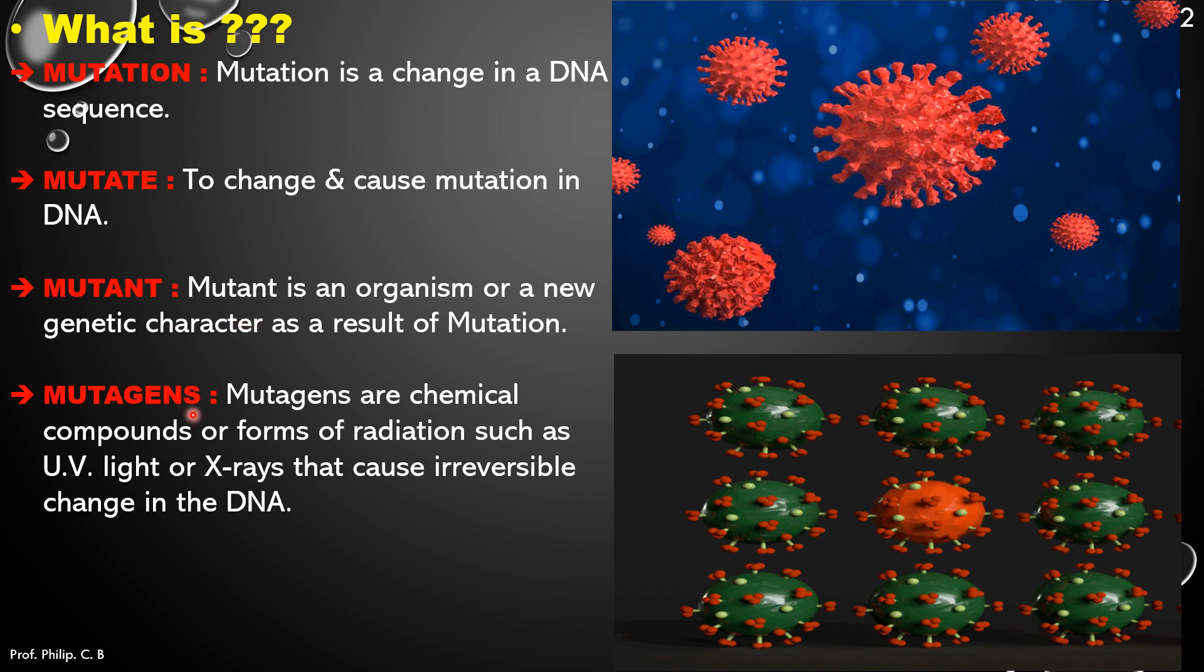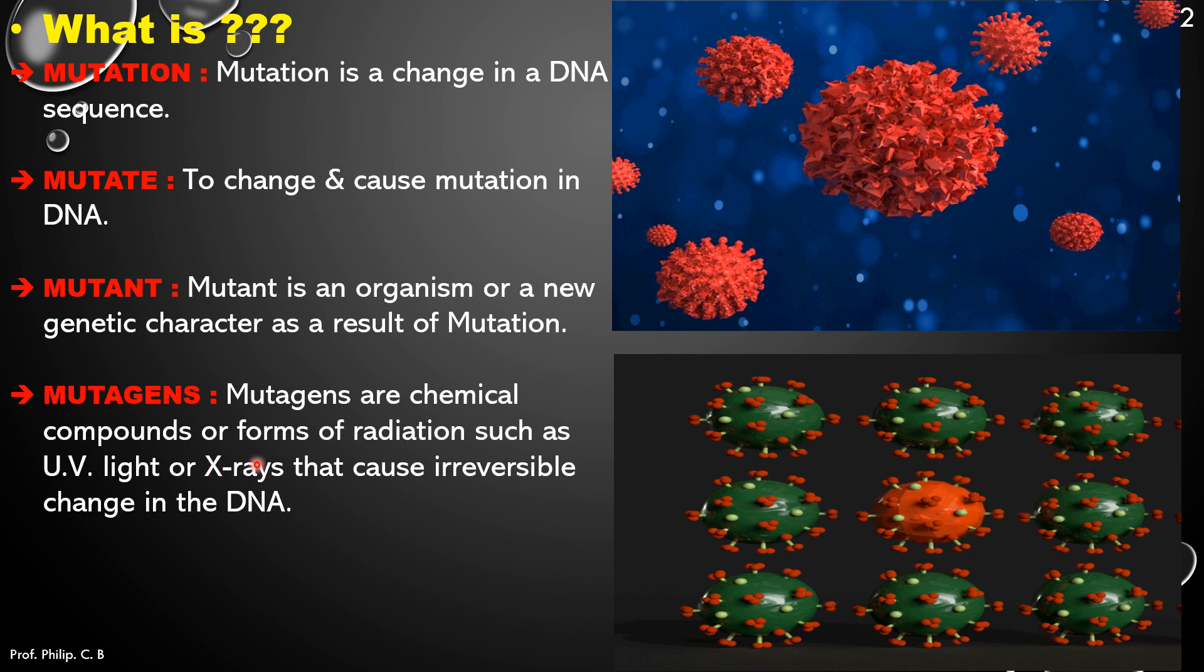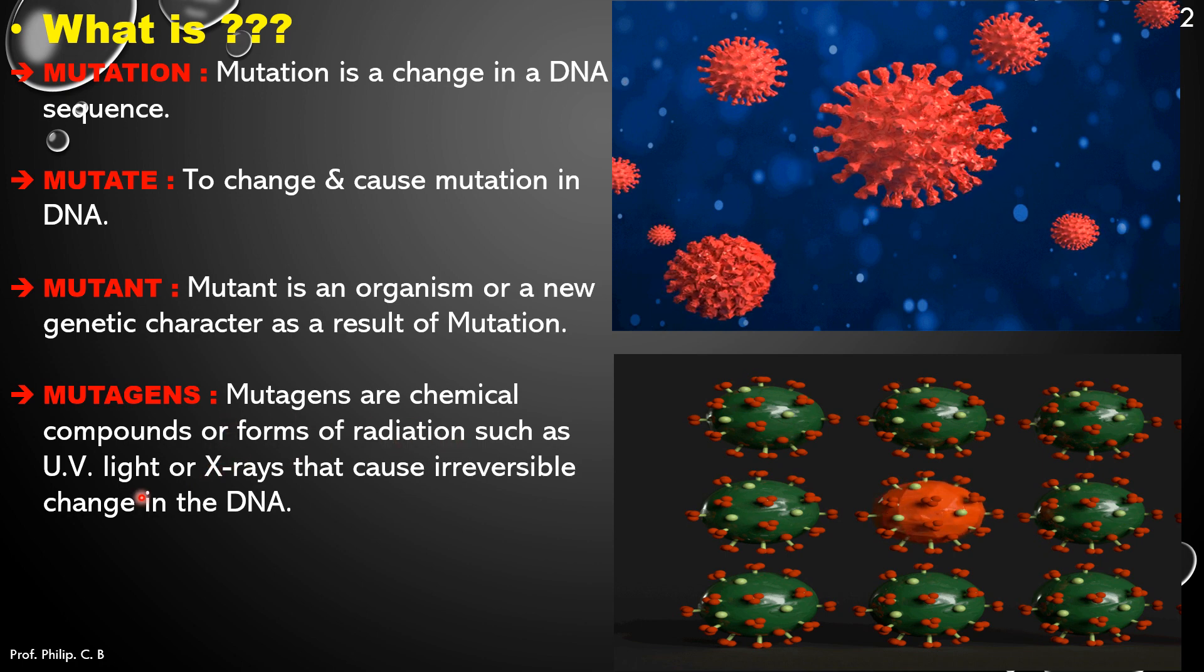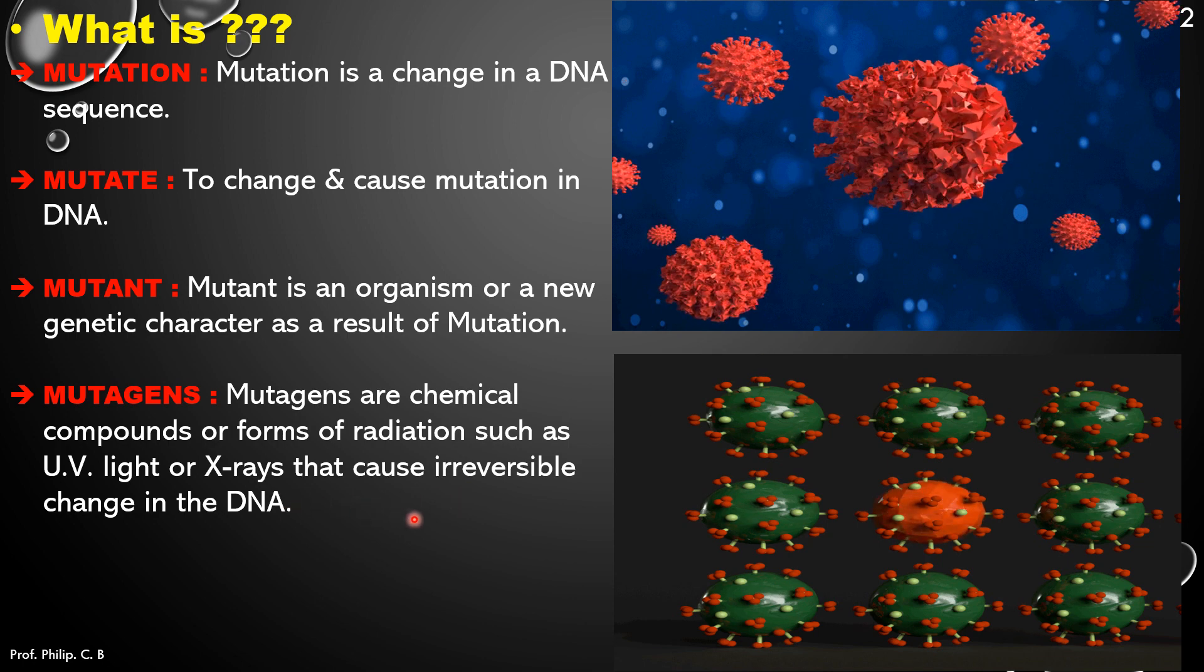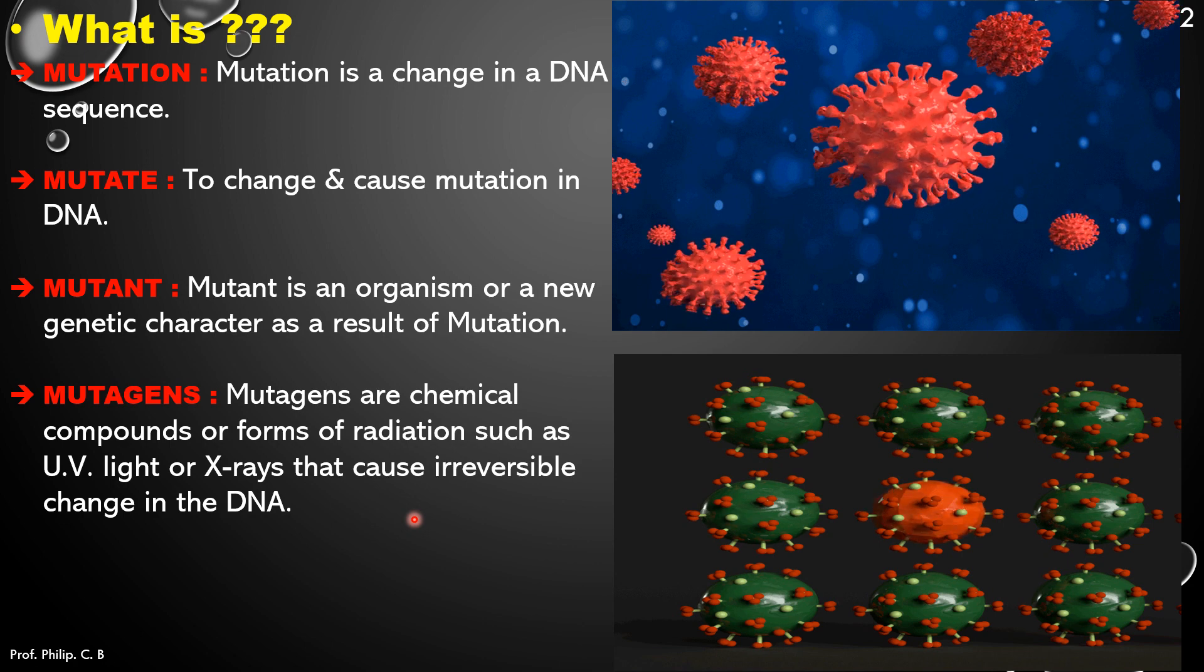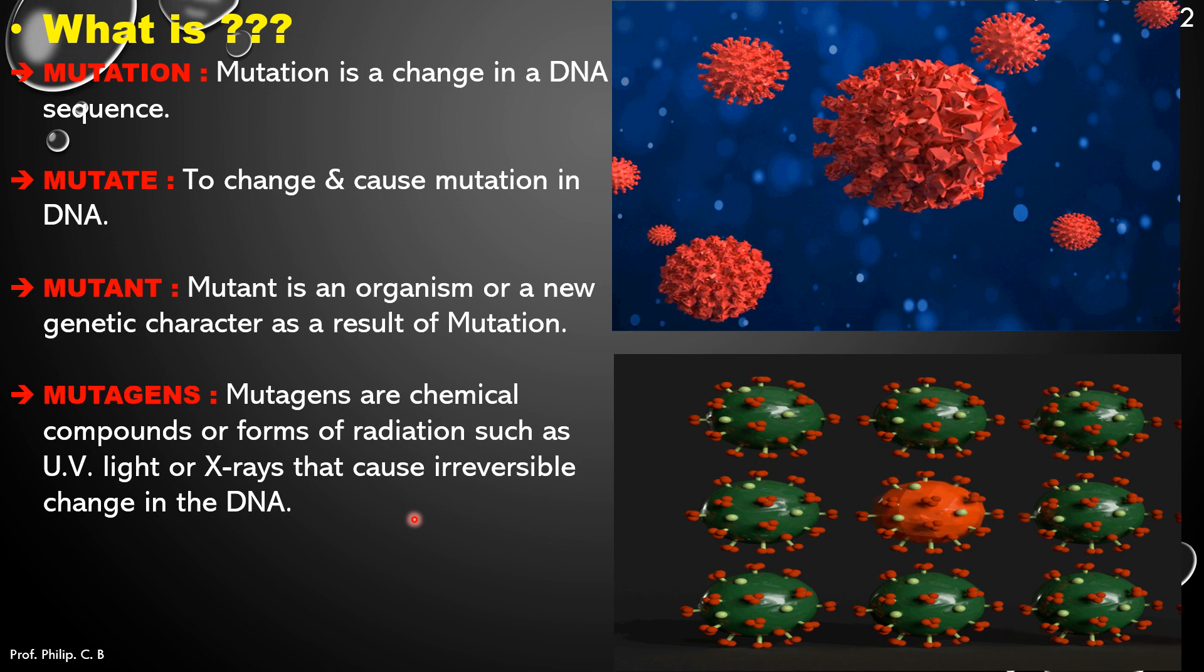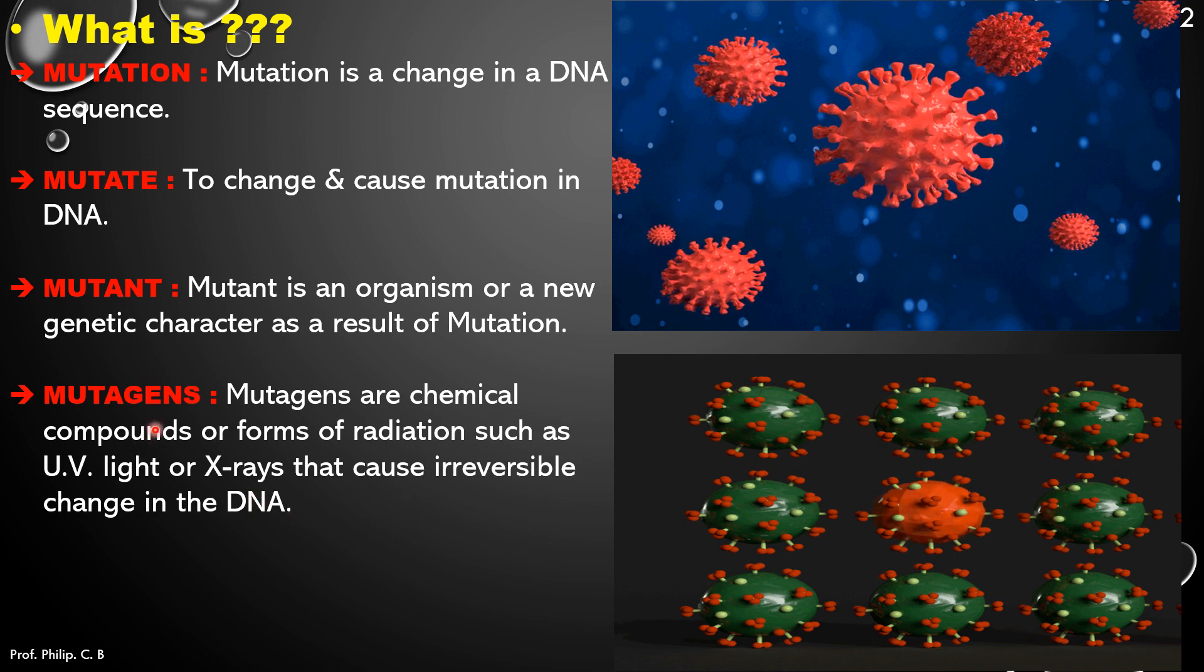Also mutagens. What is mutagens? Now mutagens are chemical compounds or forms of radiation such as UV light or X-rays that can cause irreversible change in DNA, or as we learned in the earlier part of the definition, change in the DNA sequence or alteration in the DNA sequence which is caused because of these mutagens.